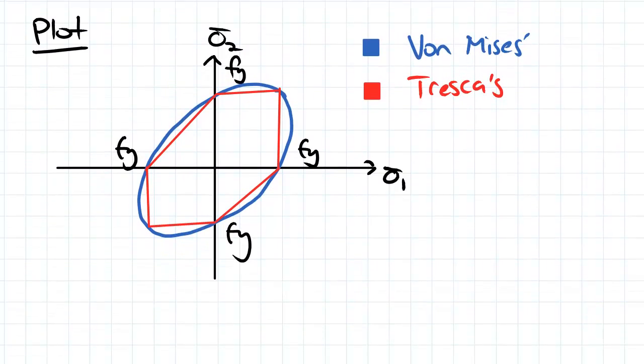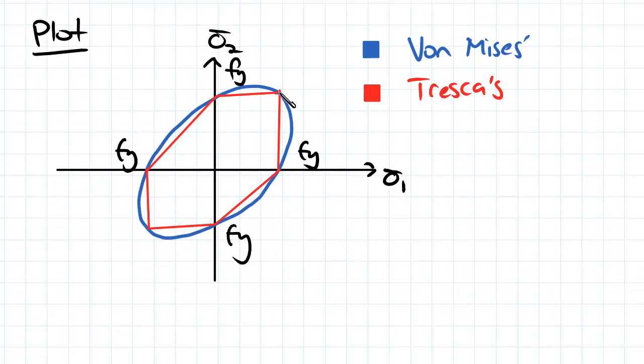So if we plot this, it's going to look a bit like this. So von Mises looks a bit like an ellipse at an angle. So if we plotted all of the different results that we could have, obviously if you're in the inside, then you're not going to yield. When you hit this surface here, you yield. And then outside, you're past the point of yielding.